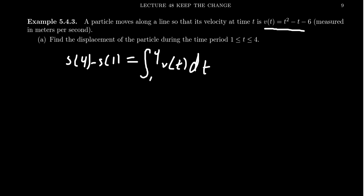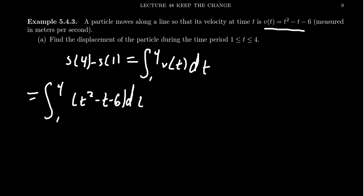So s(4) minus s(1) — we can figure out how far it moved in this time period. This is going to be the integral from one to four of the velocity function, so using v(t) = t² - t - 6 dt.